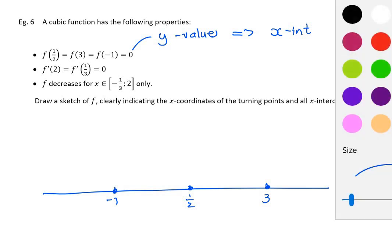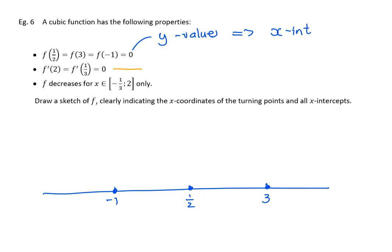The question then carries on to say that f'(2) and f'(1/3) = 0. So these are stationary points. x = 2 is roughly about there, and x = 1/3 is roughly about there, and those will be turning points. And then it says f decreases for x between -1/3 and 2. So from this value to that value, the graph has to be decreasing. So I can now figure out that my graph must be going up through the axis there and maximizing there so that it can go down here and minimize there and then go up.